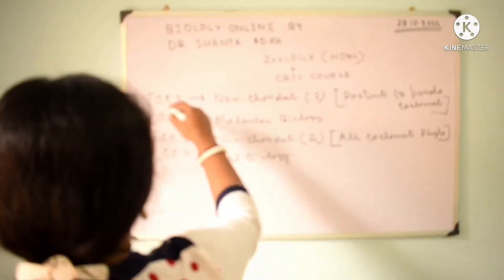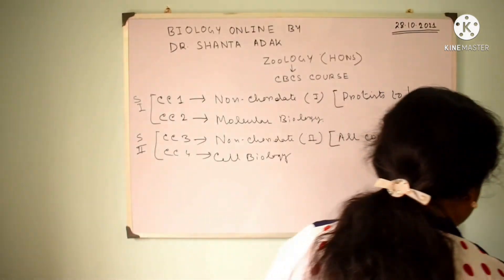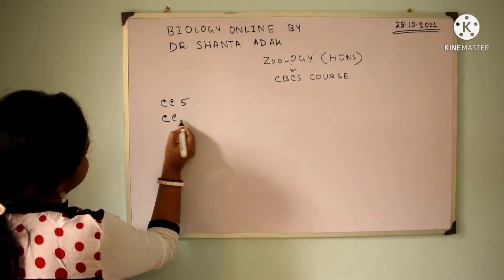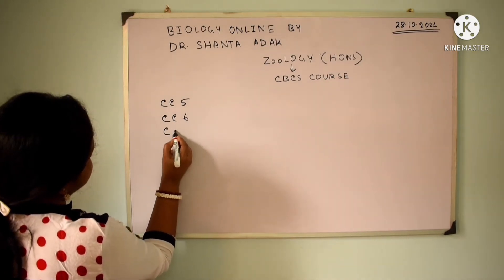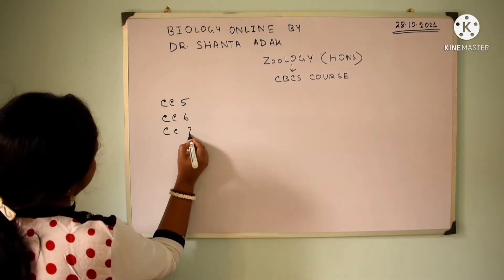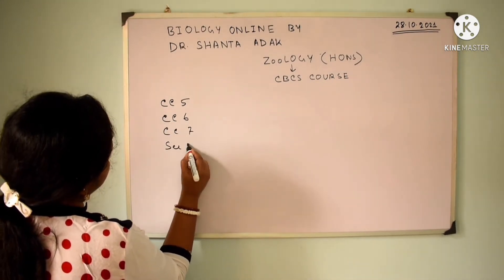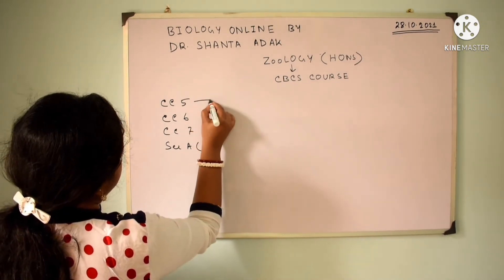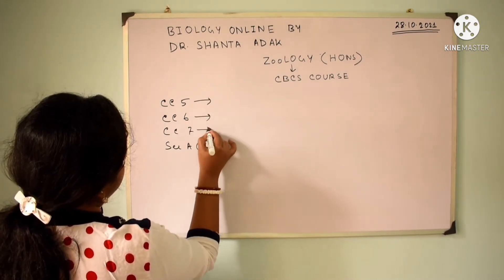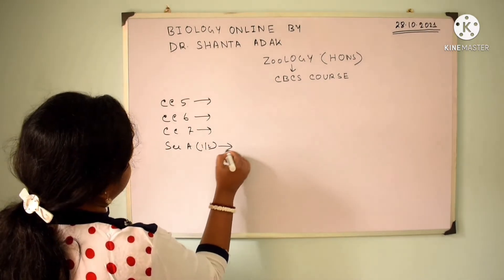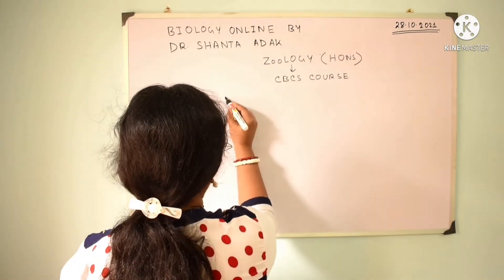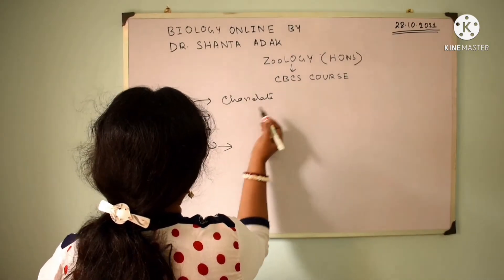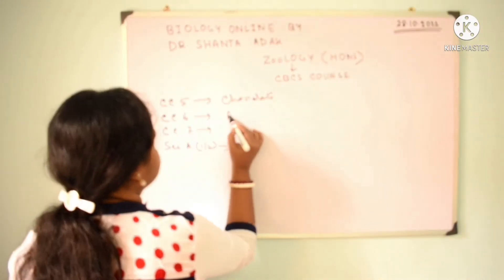So, this covers Semester 1 and Semester 2. Moving on to Semester 3: CC5 covers Chordata, and also Enderal Physiology.